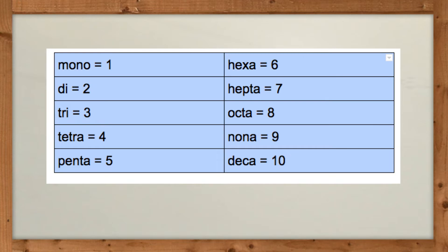Hepta is 7, octa is 8, nona is 9, and deca is 10. It will help you if you memorize these.